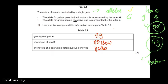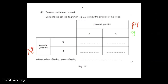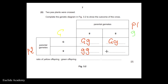The allele for green peas is recessive (lowercase g) and the allele for yellow is dominant (uppercase G). From the cross of gg × Gg, the alleles are sorted together in combinations: Gg, Gg, gg, gg. We get two offspring that are heterozygous dominant (Gg) and two that are homozygous recessive (gg).